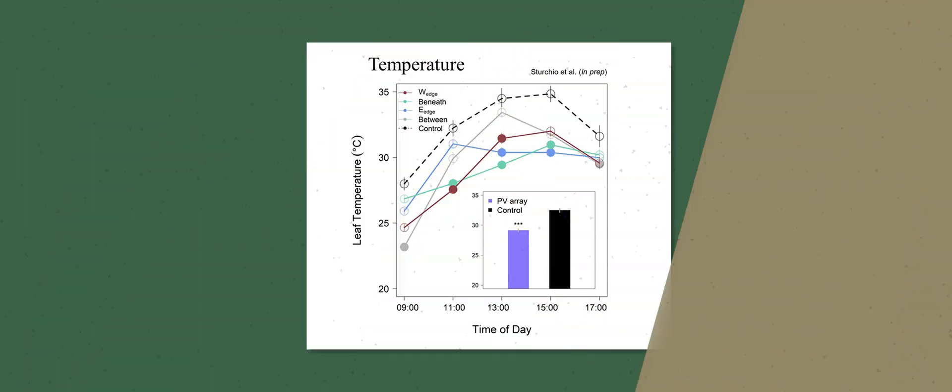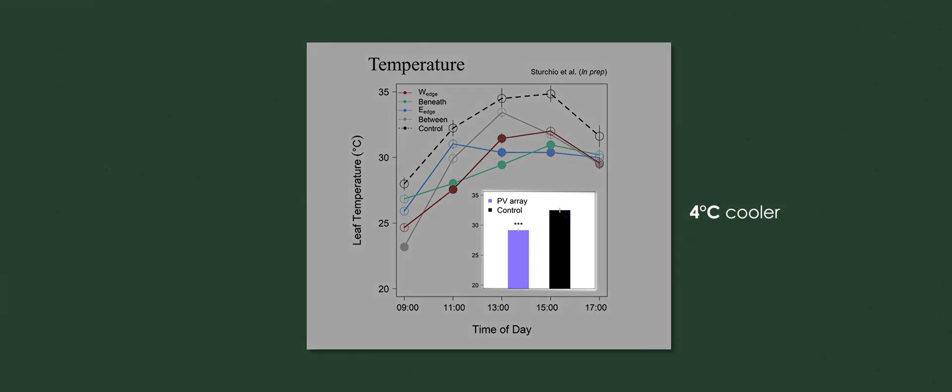We found that leaf temperatures are about four degrees centigrade, so that's like seven degrees Fahrenheit cooler on average inside of a solar array versus outside of a solar array. There are a lot of plants that could benefit from this lower temperature during the middle of summer in Colorado.